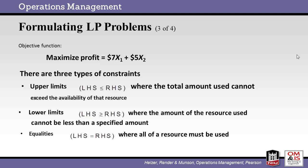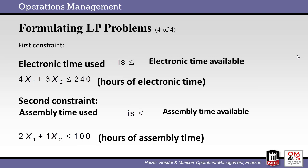There are also several constraints that must be considered. In this case, we cannot exceed the time available in the two departments. The two constraints for the two departments will be calculated here. From the initial data, we know how many hours each product spends in the two departments. For the electronic department, we get that 4 times x1 plus 3 times x2 must not exceed 240 hours. For the assembly department, the constraint is that 2 times x1 plus 1 times x2 must not exceed 100 available hours.